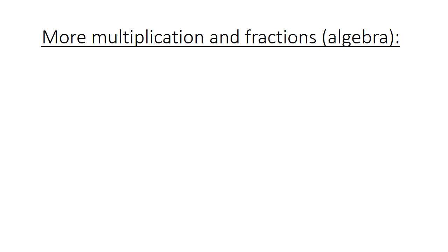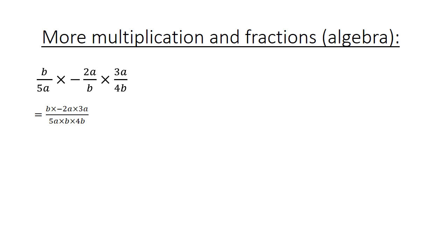More multiplication and fractions — algebra: b over 5a, times negative 2a over b, times 3a over 4b. Multiply all numerators: b times negative 2a times 3a. Multiply all denominators: 5a times b times 4b. That gives negative 6a squared b over 20ab squared. Simplify to negative 6a over 20b, and simplify again to negative 3a over 10b.